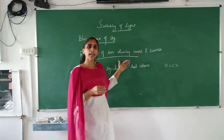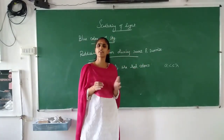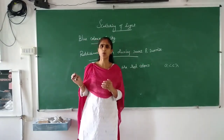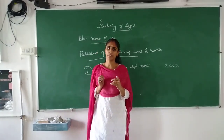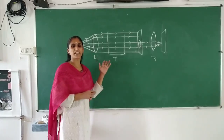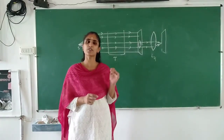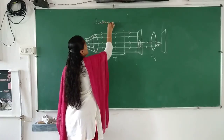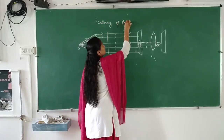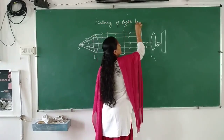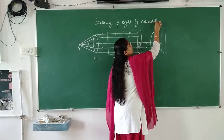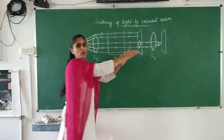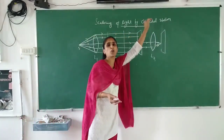To explain why the sky appears blue and why the sun appears reddish, we will discuss a small activity. We will draw the diagram for this activity. This diagram is to discuss about the scattering of light by a colloidal solution. First of all we have to prepare a colloidal solution.